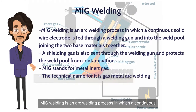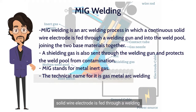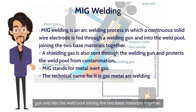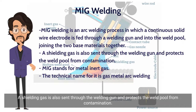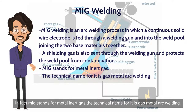MIG welding is an arc welding process in which a continuous solid wire electrode is fed through a welding gun and into the weld pool, joining the two base materials together. A shielding gas is also sent through the welding gun and protects the weld pool from contamination. MIG stands for metal inert gas, and the technical name for it is gas metal arc welding.